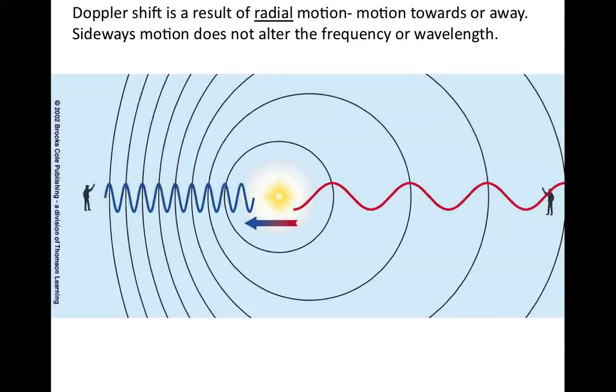It's important to remember that the towards and away is the critical point here. The Doppler shift is a result of radial motion, that is, the motion towards or away from you. Sideways motion does not alter the frequency or the wavelength.